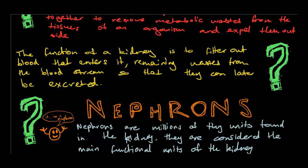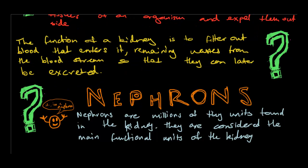Nephrons are the millions of tiny units found in the kidney and are considered the main functional unit. The kidney is quite a complex organ, but the main thing that makes it work are these nephrons. Nephrons are in charge of many of the main functions of the kidney, and therefore they're considered the main functional units.